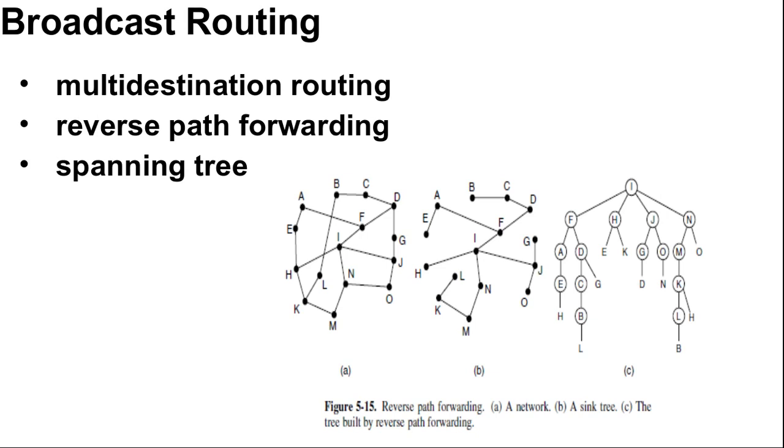We have already seen a better broadcast routing technique like flooding. When implemented with a sequence number per source, flooding uses links efficiently and is resilient. Although flooding is not suited for ordinary point-to-point communication, it is quite interesting for broadcasting. It turns out that we can do better still once the shortest path routes for regular packets have been computed.